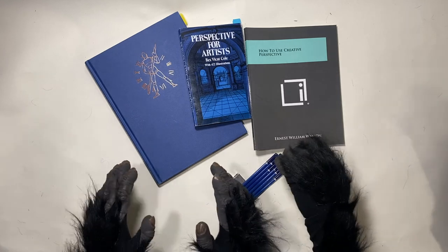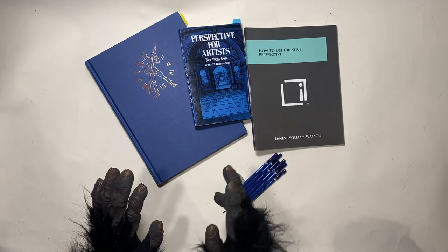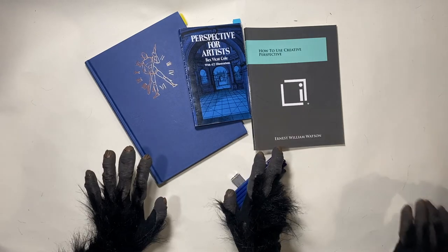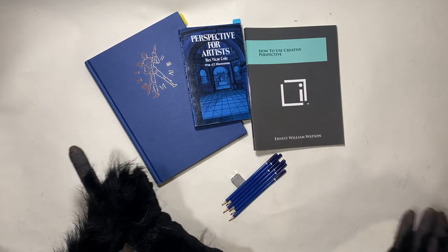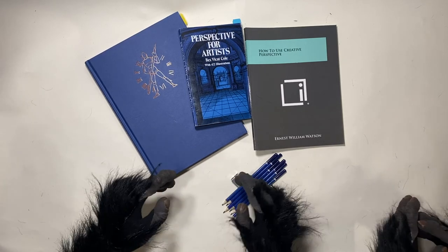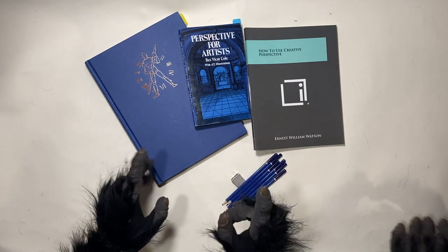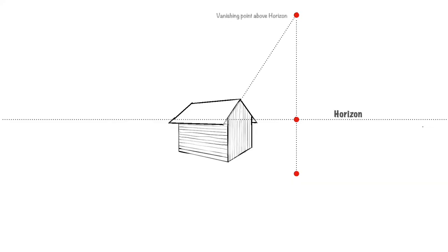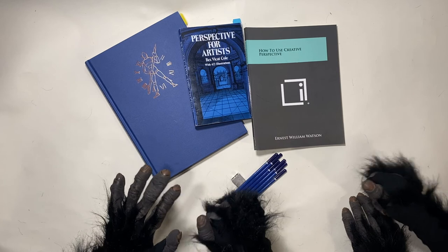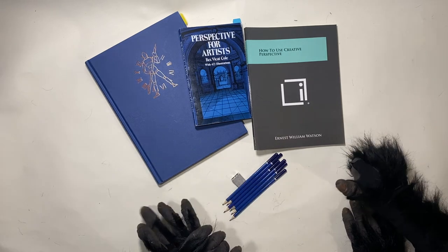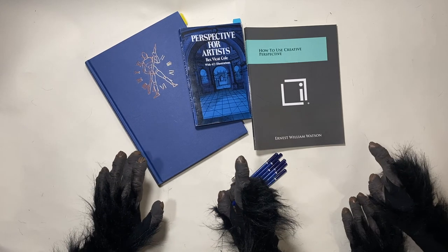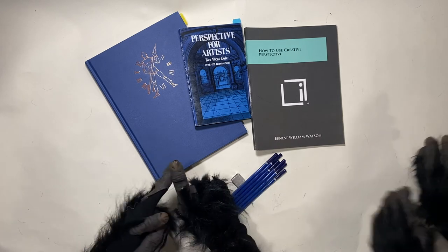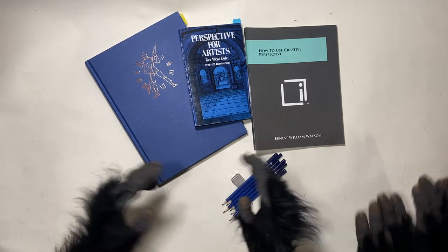So far, talking about vanishing points and the horizon, we've been doing so only in relationship to level planes — parking lots, football fields, flat roads. Vanishing points can also be above or below the horizon, but we will go into much greater depth in later videos. An important thing to remember is that sometimes vanishing points — really important ones — can live outside the space of your canvas, drawing pad, or whatever you're making art on.